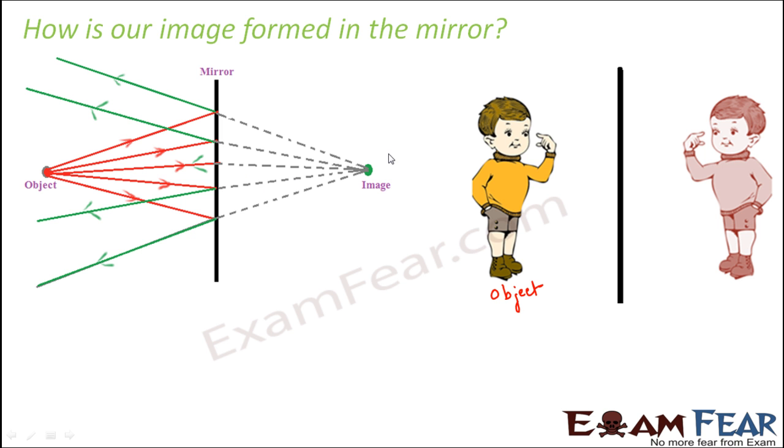But if you try to locate them at a point, you will see that all these rays would seem to meet at a point, and this is the point where an image is formed.